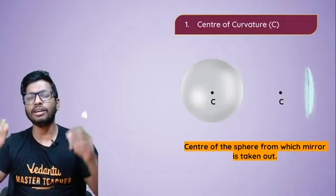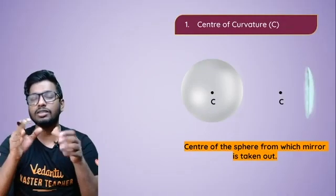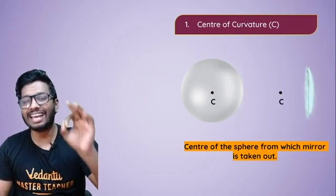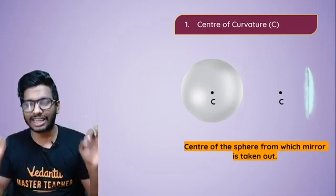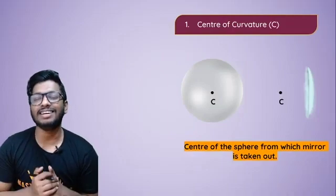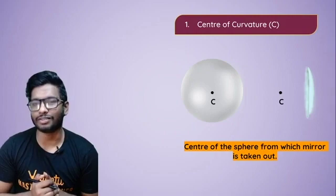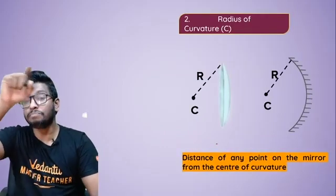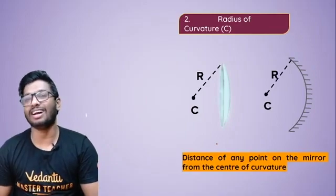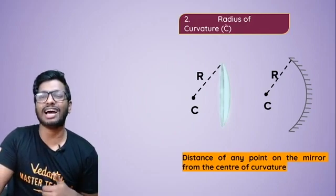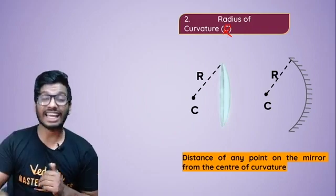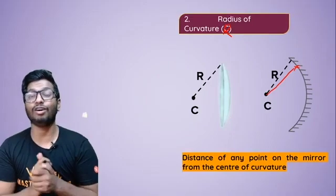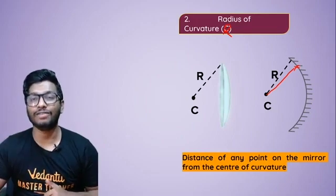Let's go one by one. The center of curvature: I told you that a spherical mirror is basically a part of a bigger glass sphere. The geometric center of that glass sphere is the center of curvature — as simple as that. Now the radius of curvature: whatever is the distance from the center of curvature to any point on that spherical surface is called the radius of curvature, which is basically the radius of the sphere itself, denoted as capital R.